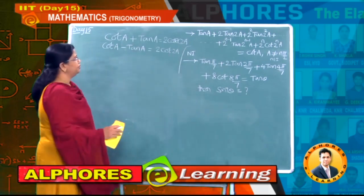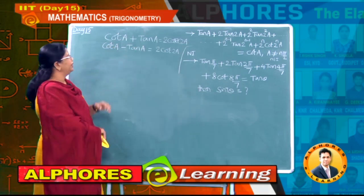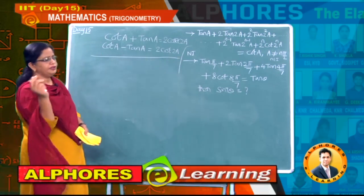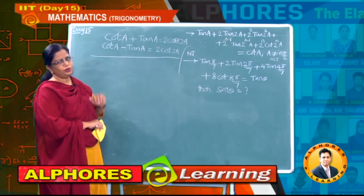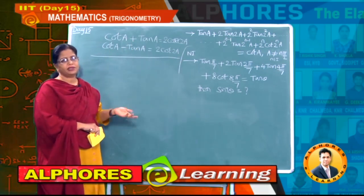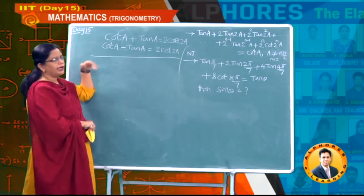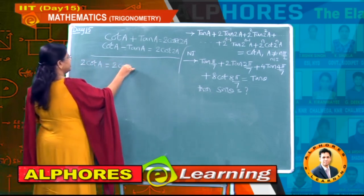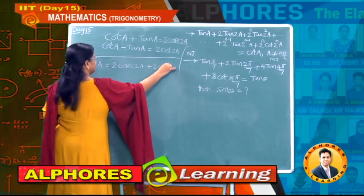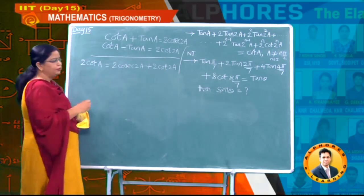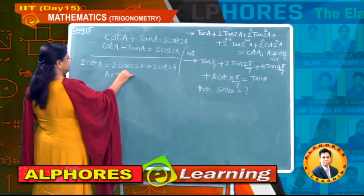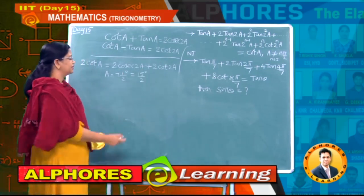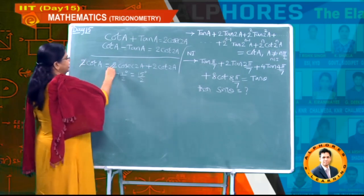We'll use: cot A + tan A = 2 cosec 2A and cot A − tan A = 2 cot 2A. Adding these two equations, tan cancels and we get 2 cot A = 2 cosec 2A + 2 cot 2A. Cancelling the 2s, and substituting A = 7½° (= 15/2°), so 2A = 15°, we get cot(7½°) = cosec 15° + cot 15°.